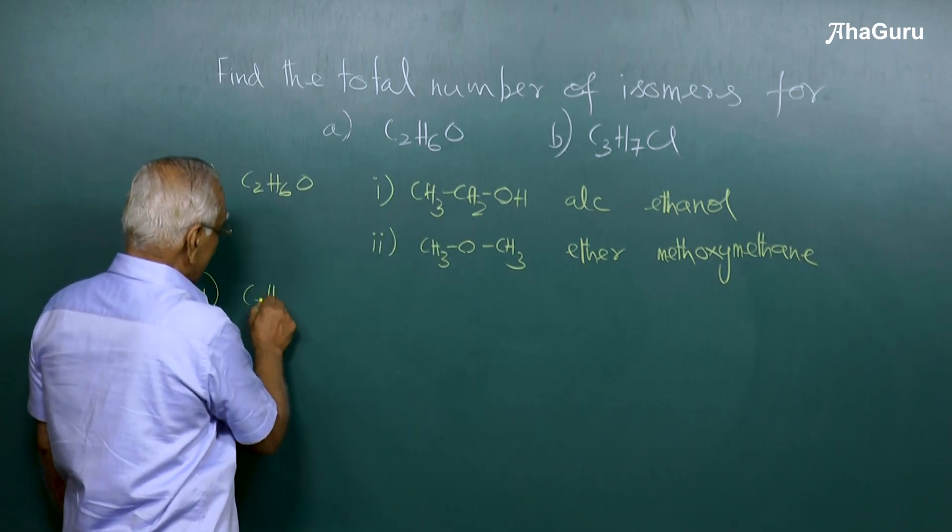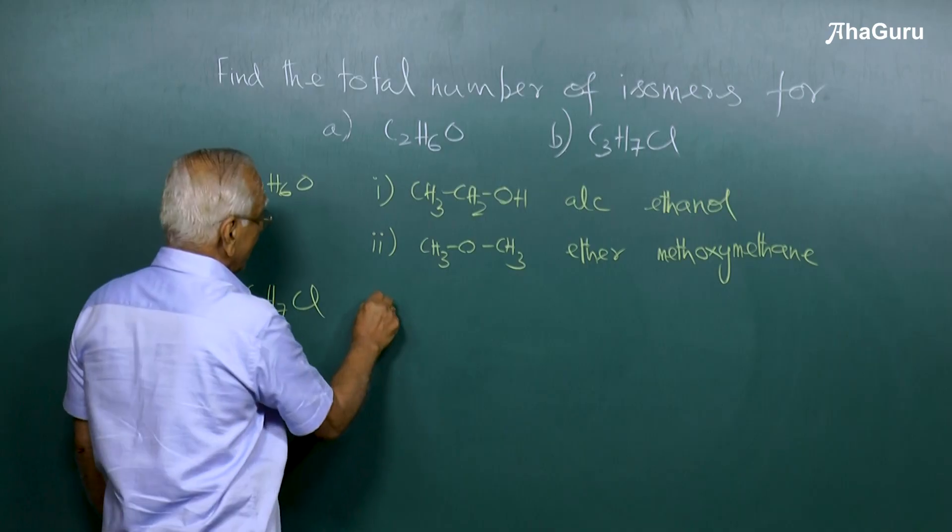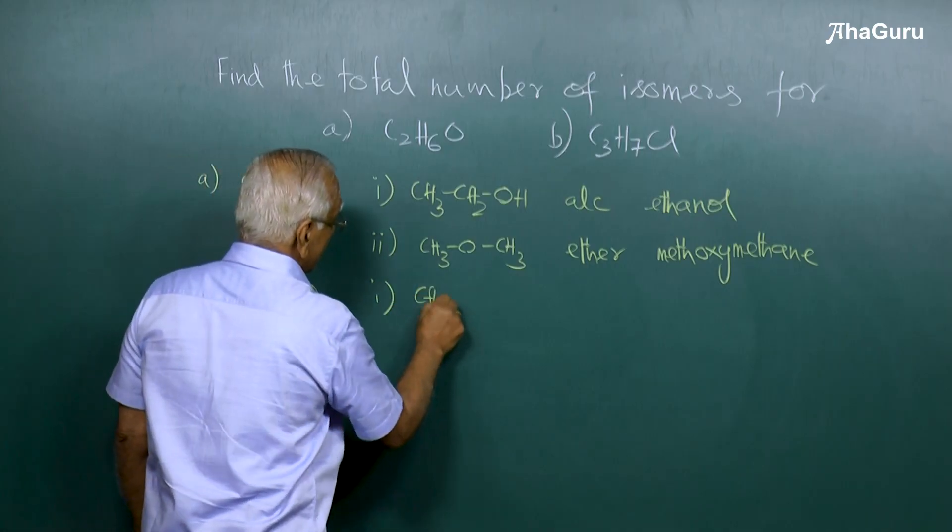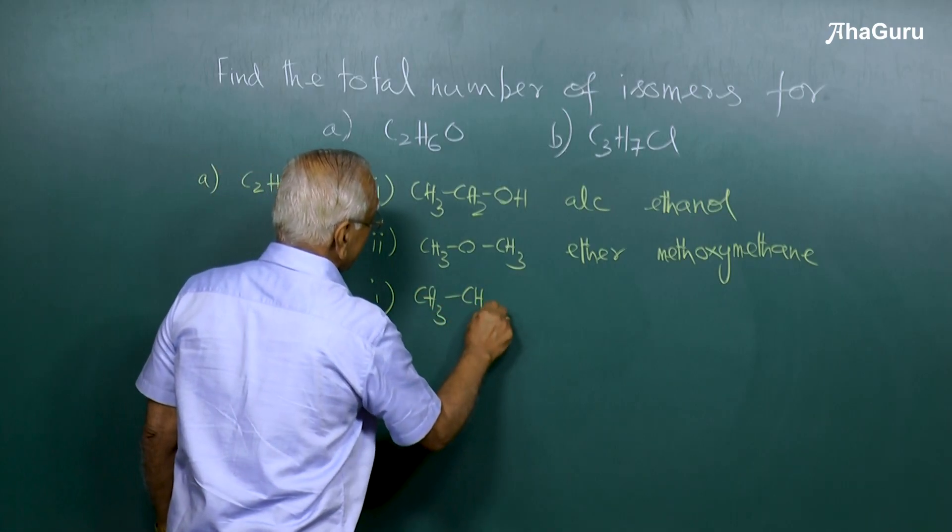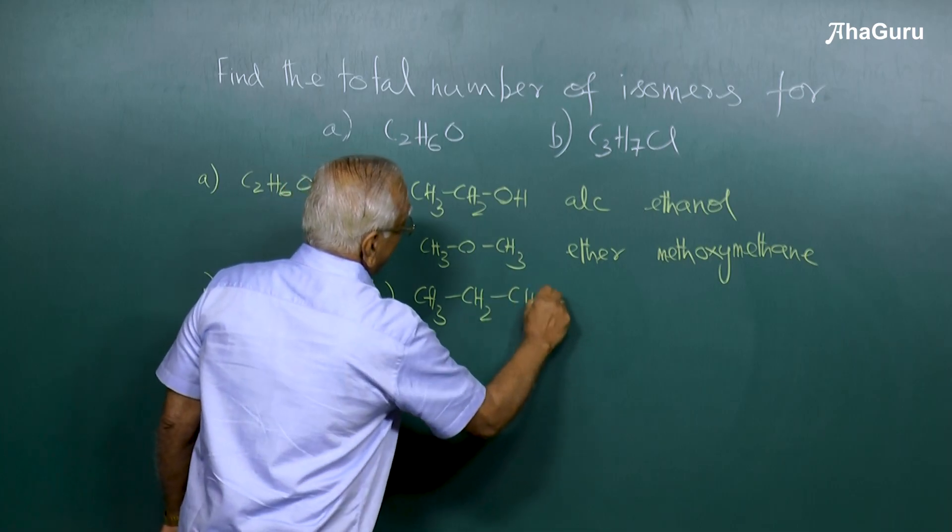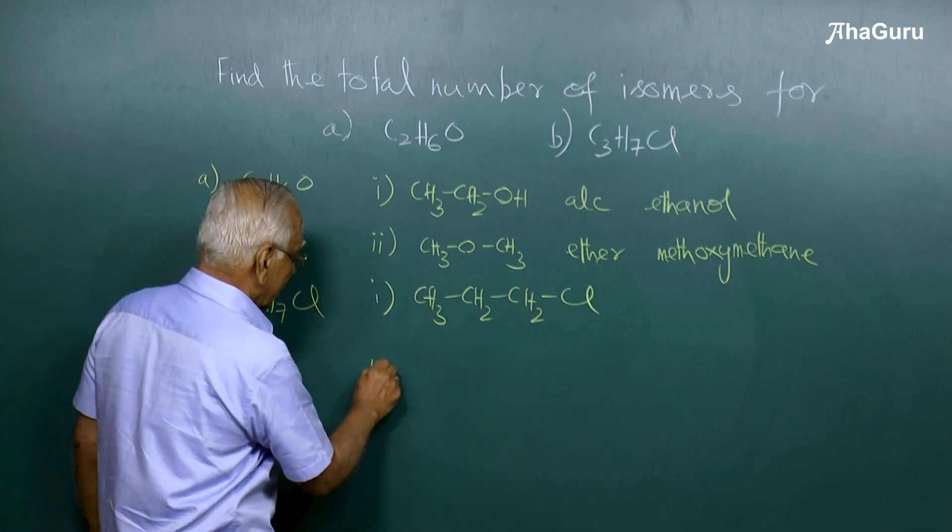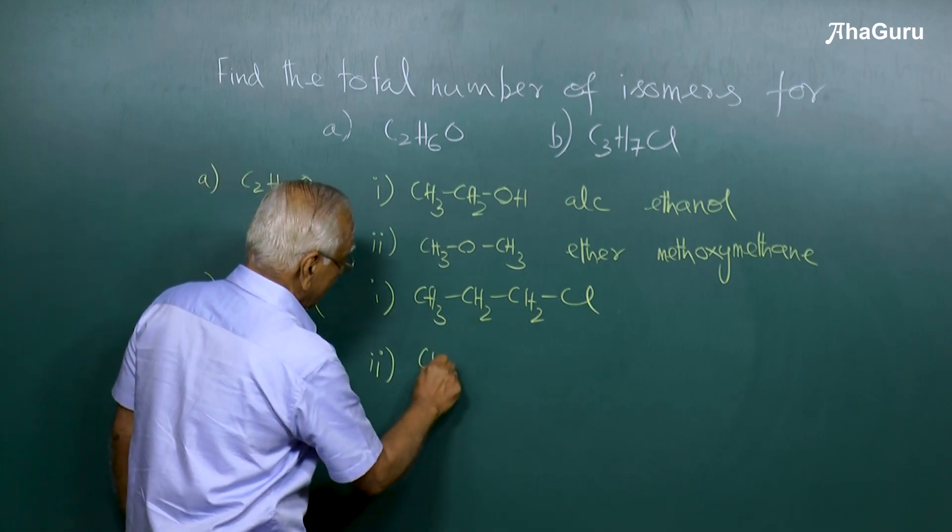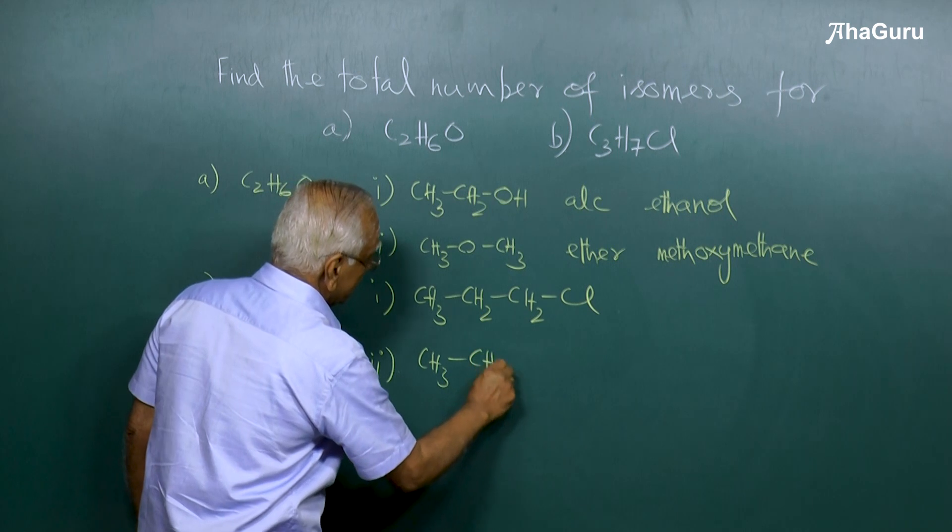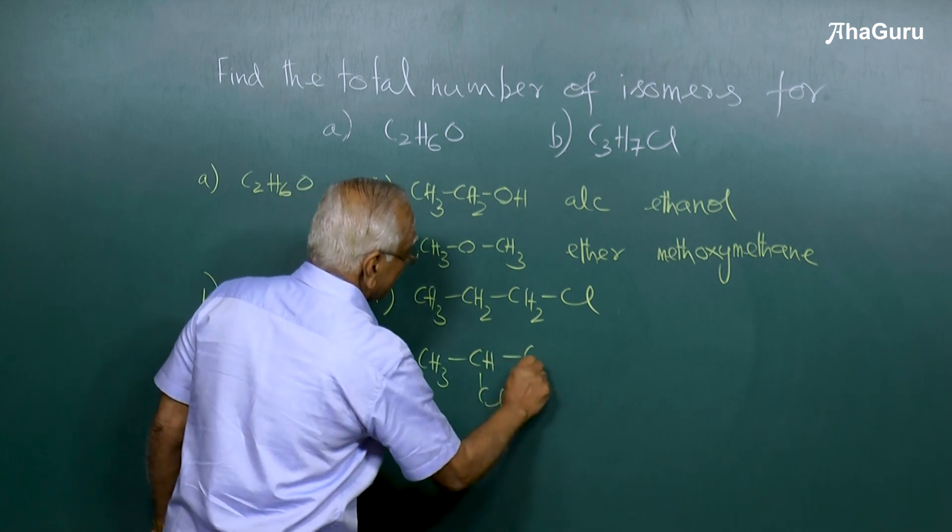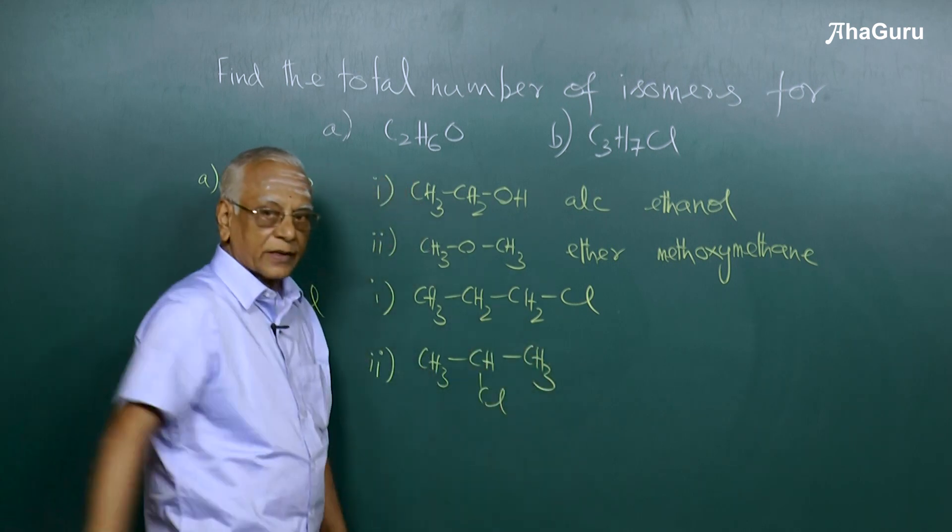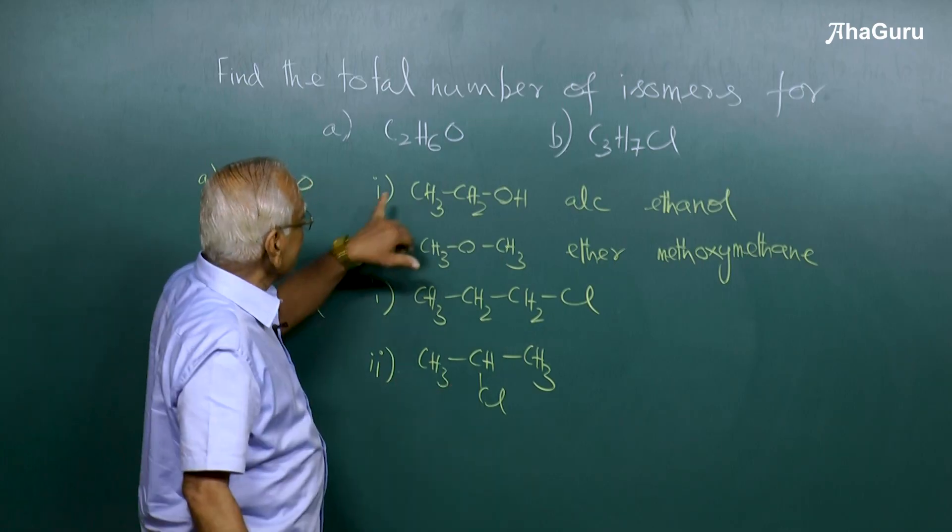If you look at the second molecule, C3H7Cl, I can write two structures: one with chlorine attached to the terminal carbon atom, second one with chlorine attached to the middle carbon atom. Both molecules have the same molecular formula and same functional group also.